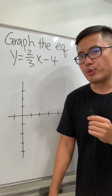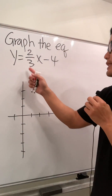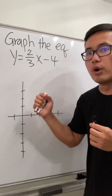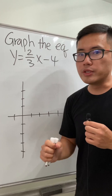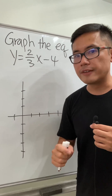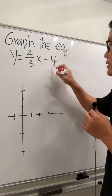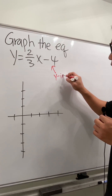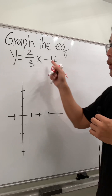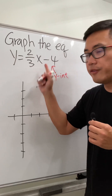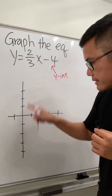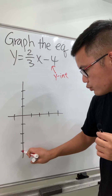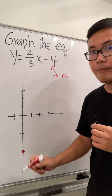I'm going to show you guys how to graph the equation y is equal to 2 over 3x minus 4. This equation is in the slope-intercept form, and we are going to start with the y-intercept, which is this right here. This tells us we will go to negative 4 on the y-axis — counting down 1, 2, 3, 4 below — and this will be negative 4.